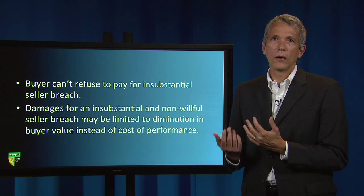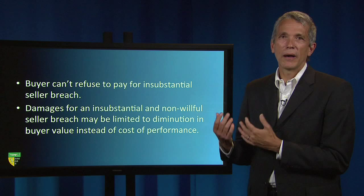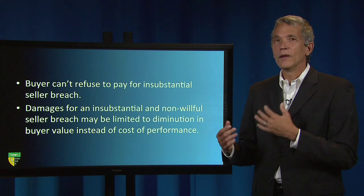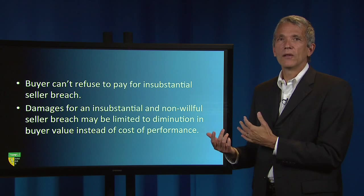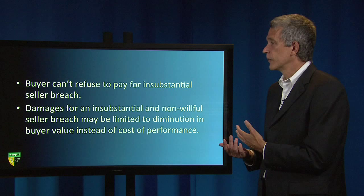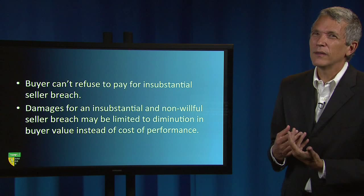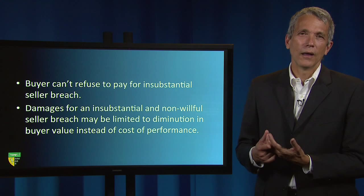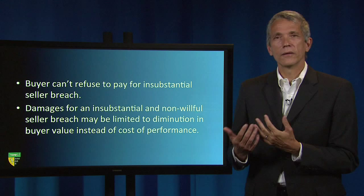Sometimes there's more than one issue to summarize. In this case, I might add not just that the buyer can't refuse to pay for an insubstantial seller breach, but also that damages for insubstantial and non-willful seller breach may be limited to diminution in buyer value instead of cost of performance. Those are the two rules you might get from the case. You might also use categories from these lectures — for example, is the rule a default or a mandatory rule? Is it a standard or a rule?